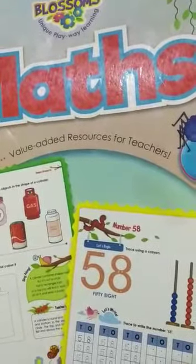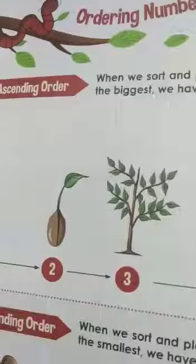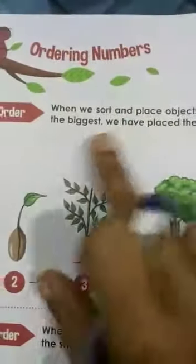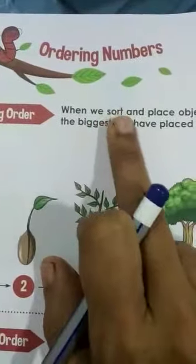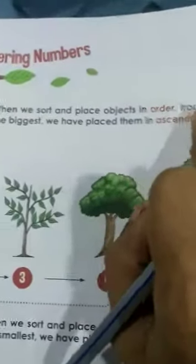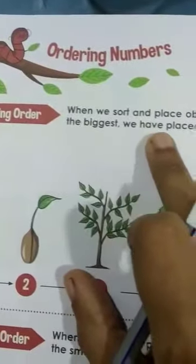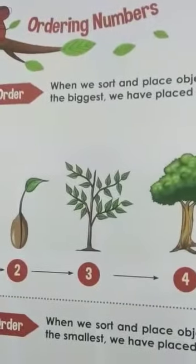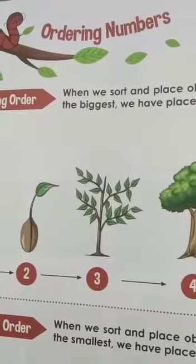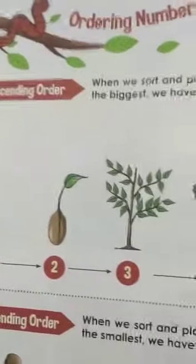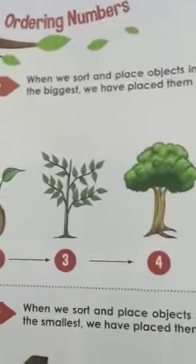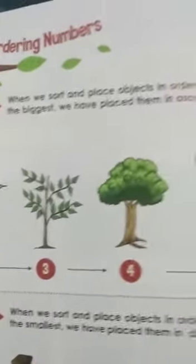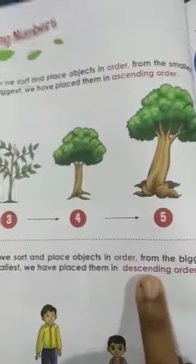Now let us see what we are going to learn today. So today we are going to learn ordering numbers. When we sort and place objects in order from the smallest to the biggest, we have placed them in ascending order. Ordering numbers can be done in ascending order and descending order.